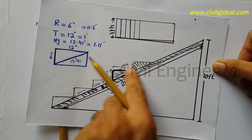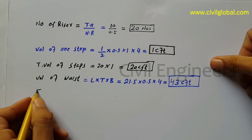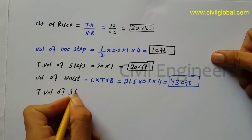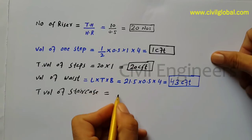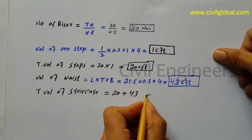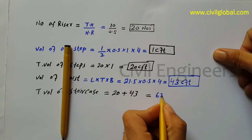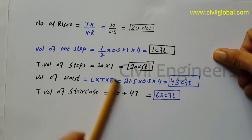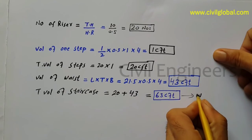Now total volume of staircase: waist is already calculated and steps are already calculated. Total volume of staircase equals 20 plus 43, which equals 63 cft. But remember, this is wet volume.